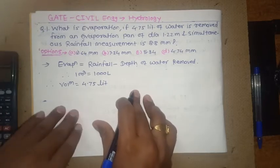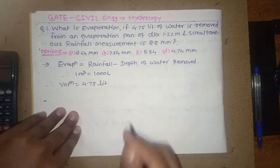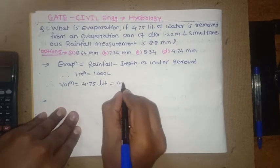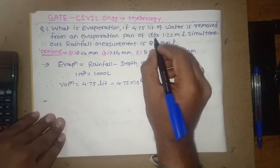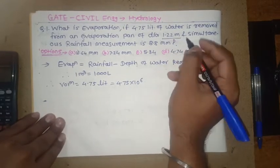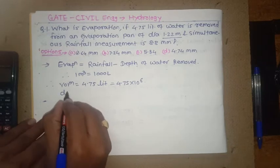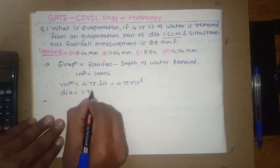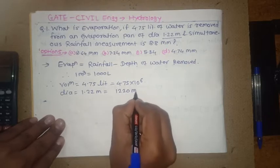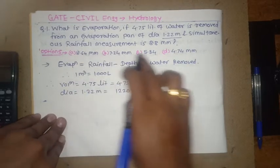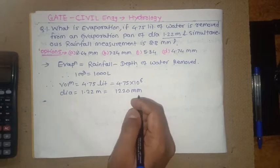Let's convert all units. Therefore, volume or water collected is 4.75 liters, so convert that in meter cube. So it comes to be 4.75 × 10^-6. Then the diameter of pan is 1.22 meters, that is 1220 mm because we required in mm, therefore convert all dimensions in mm. Rainfall is already given, 8 mm.